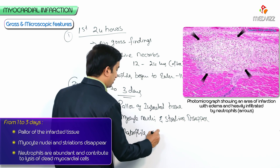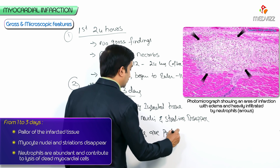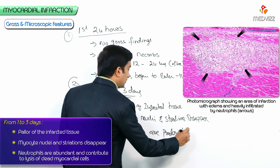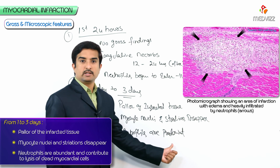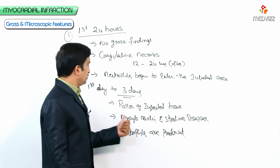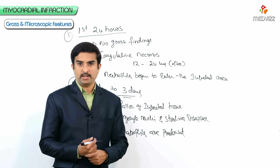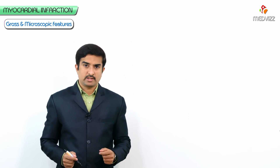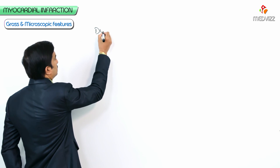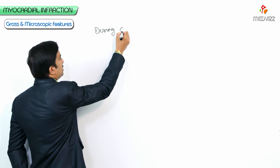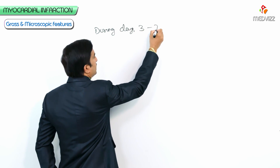Neutrophils are predominant during day 1 to day 3 and contribute to the lysis of dead myocardial cells. Next, during days 3 to 7, different changes occur.